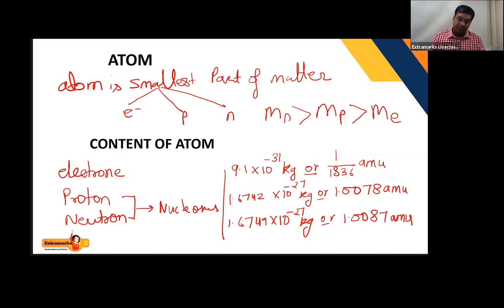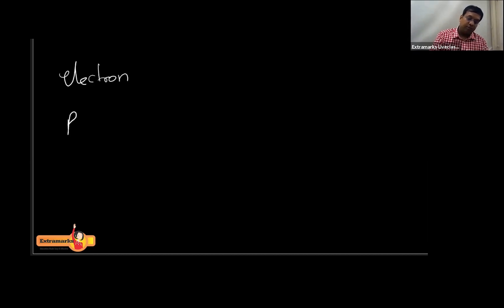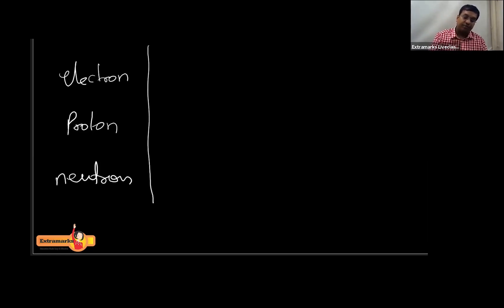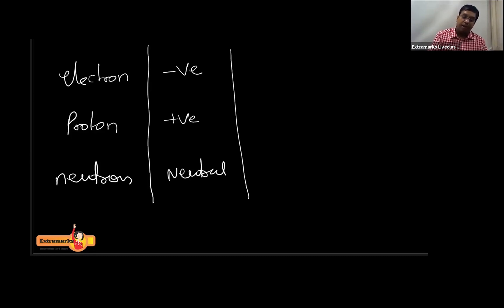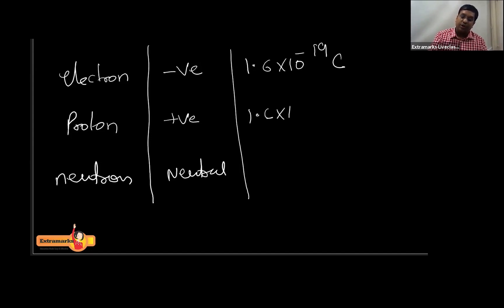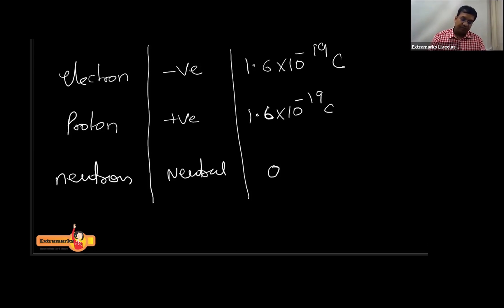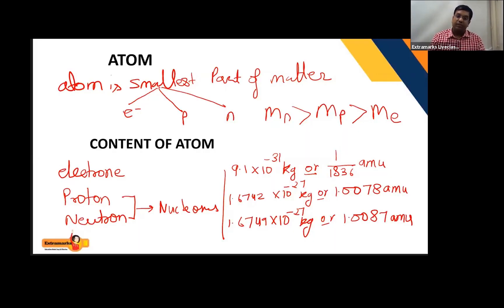Now, what are the charges of electron, proton, and neutron? Electron is negatively charged, proton is positively charged, and neutron is neutral. The magnitude of charge on the electron is 1.6 × 10⁻¹⁹ coulombs. For the proton it is the same — 1.6 × 10⁻¹⁹ coulombs — but it is positively charged. The neutron is neutral, so its charge is zero.